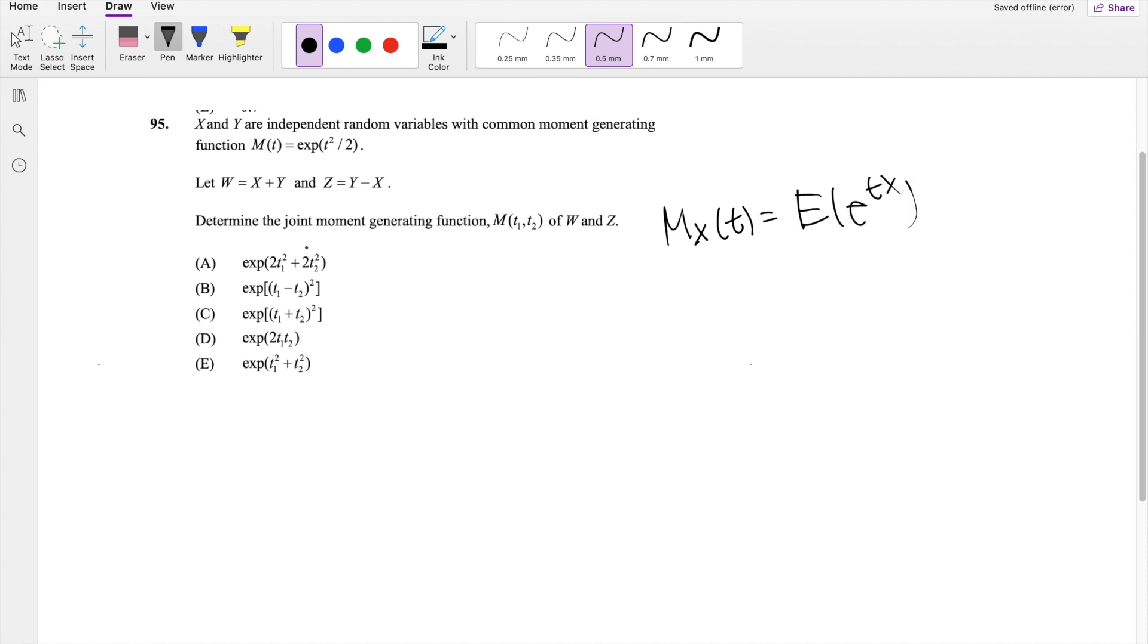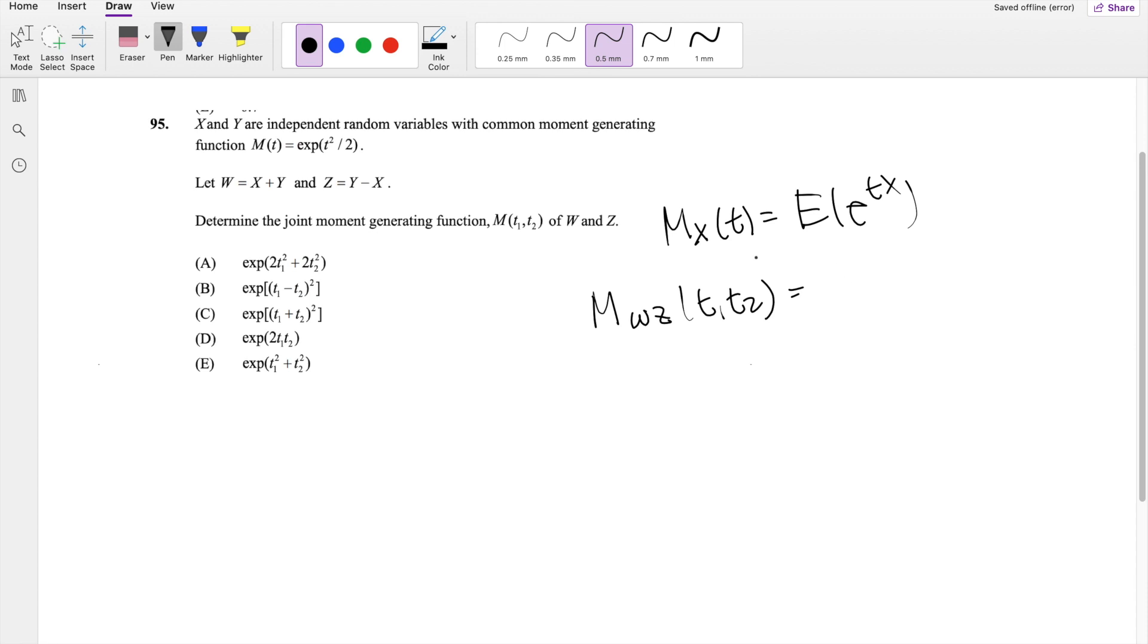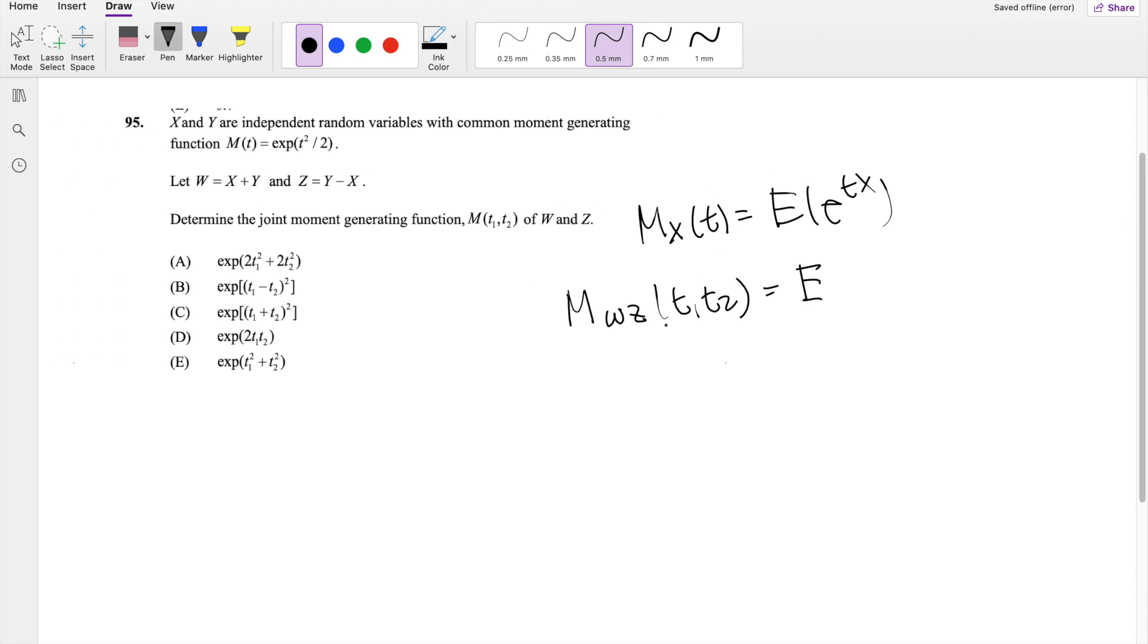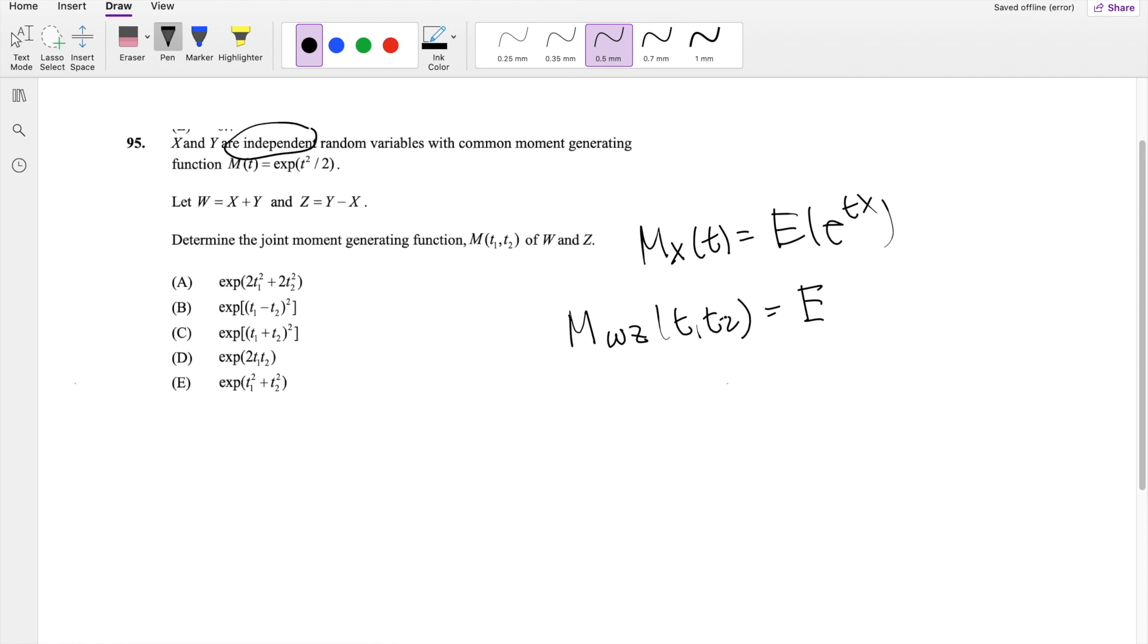So if we're asked to find the moment generating function M(T1, T2) of W and Z, that's basically just saying M of W and Z of T1 and T2. So putting it back in our formula here, this is equal to the expected value. And we also know that these are independent. So by independency, we can actually just multiply them together.